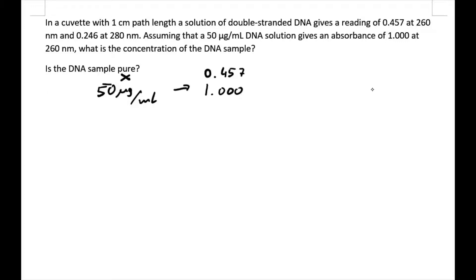We simply divide the left hand side and the right hand side by each other and solve for X. So X equals 0.457 times 50 microgram per milliliter. Putting that into a calculator gives us 22.85 microgram per milliliter for the concentration of our sample.